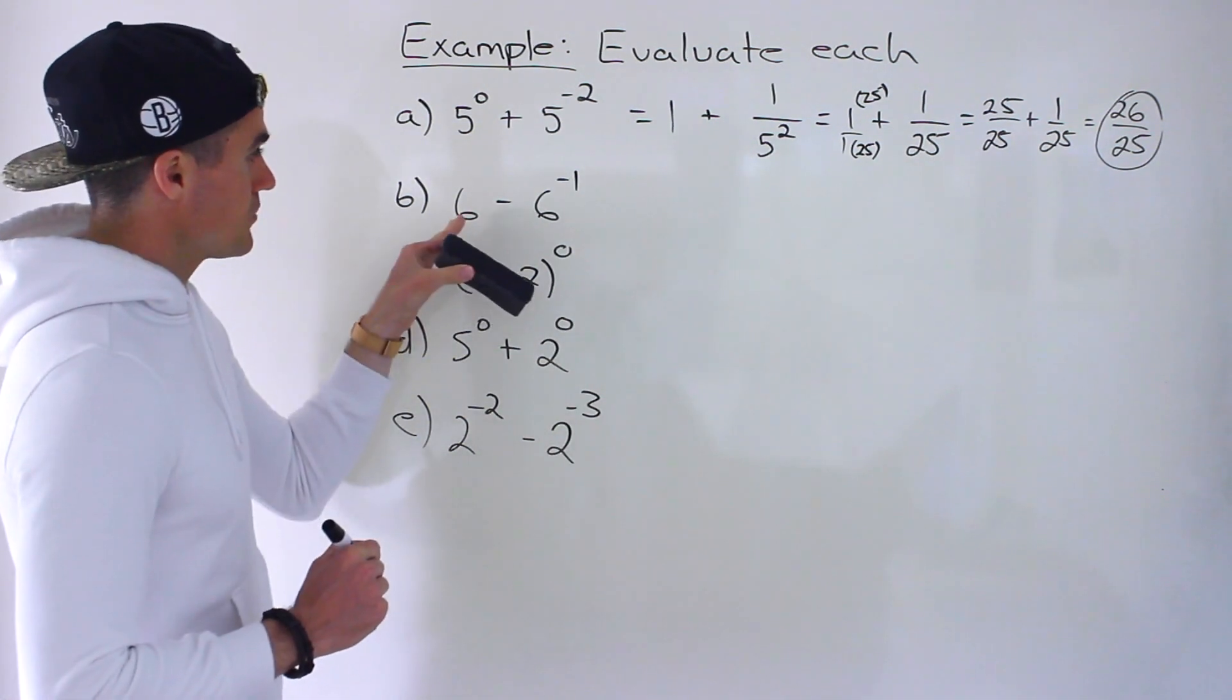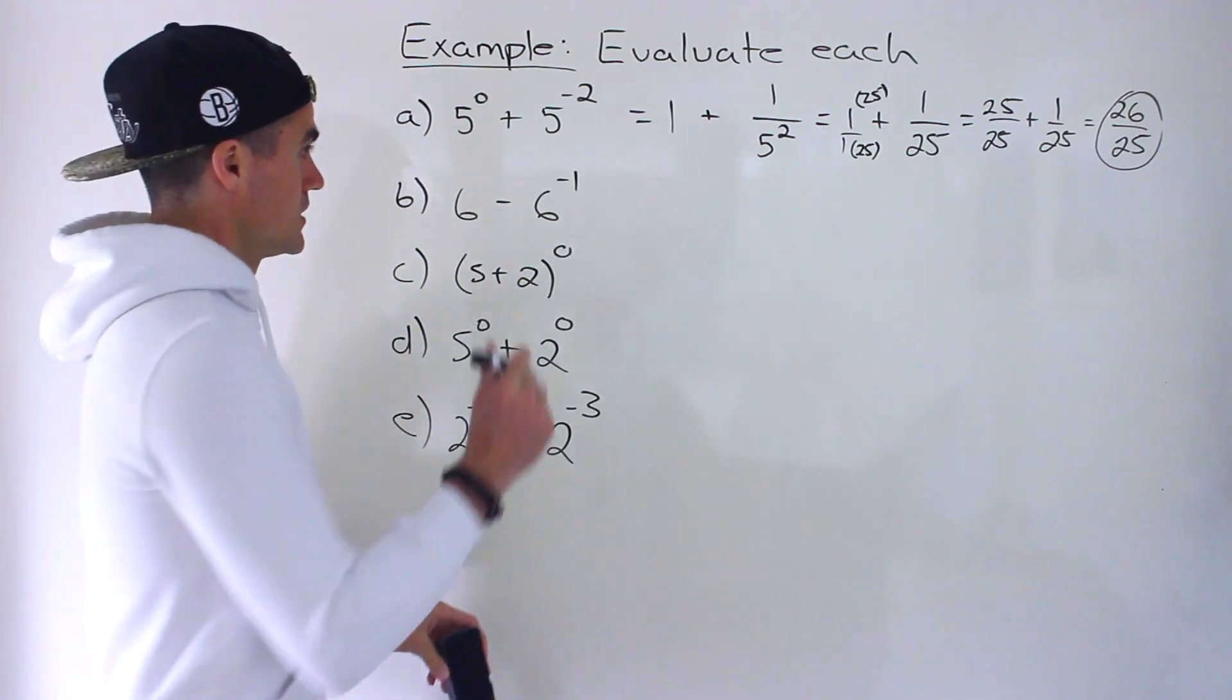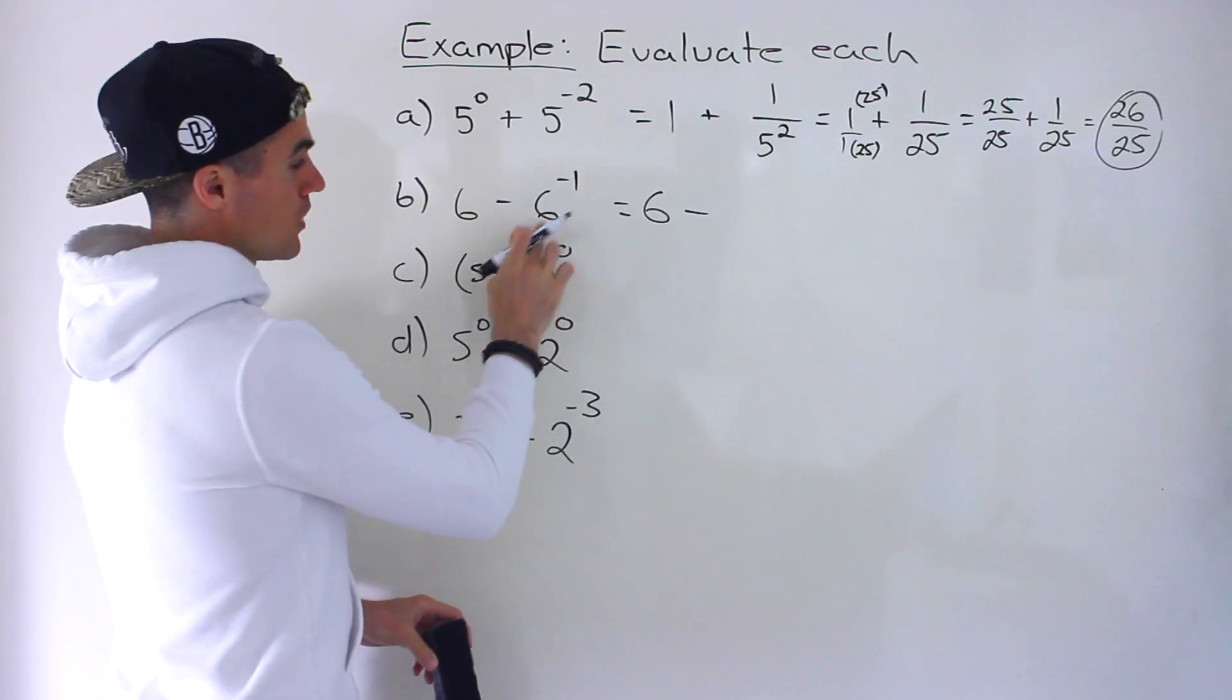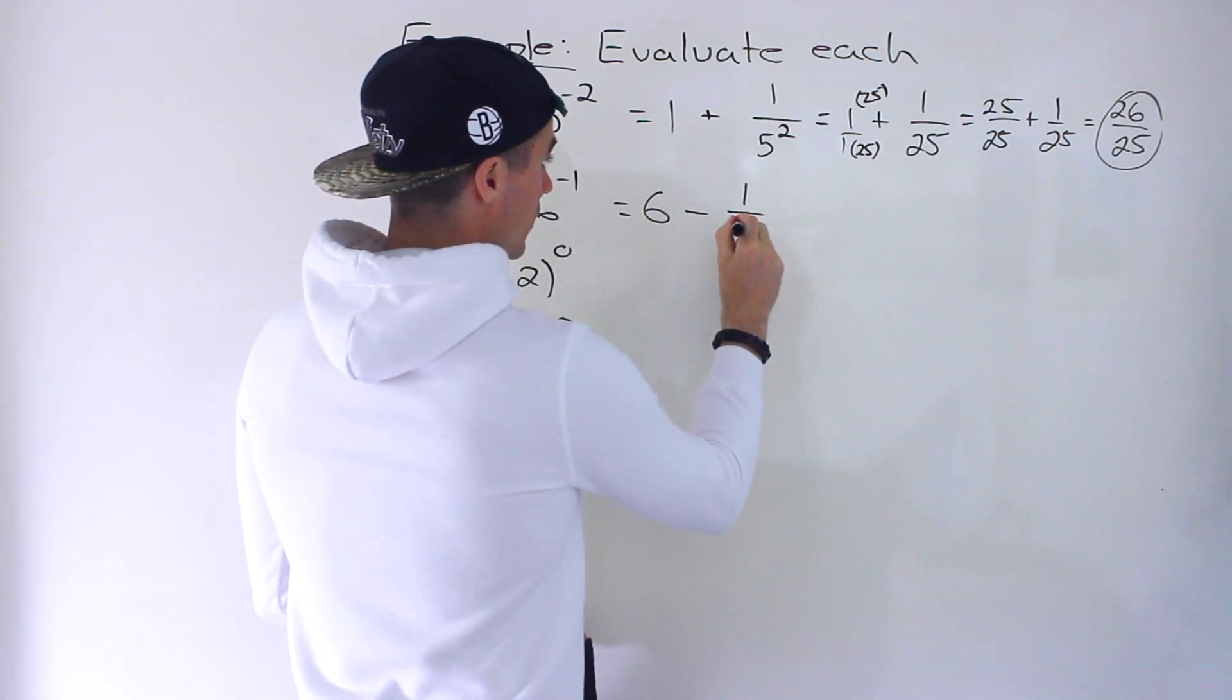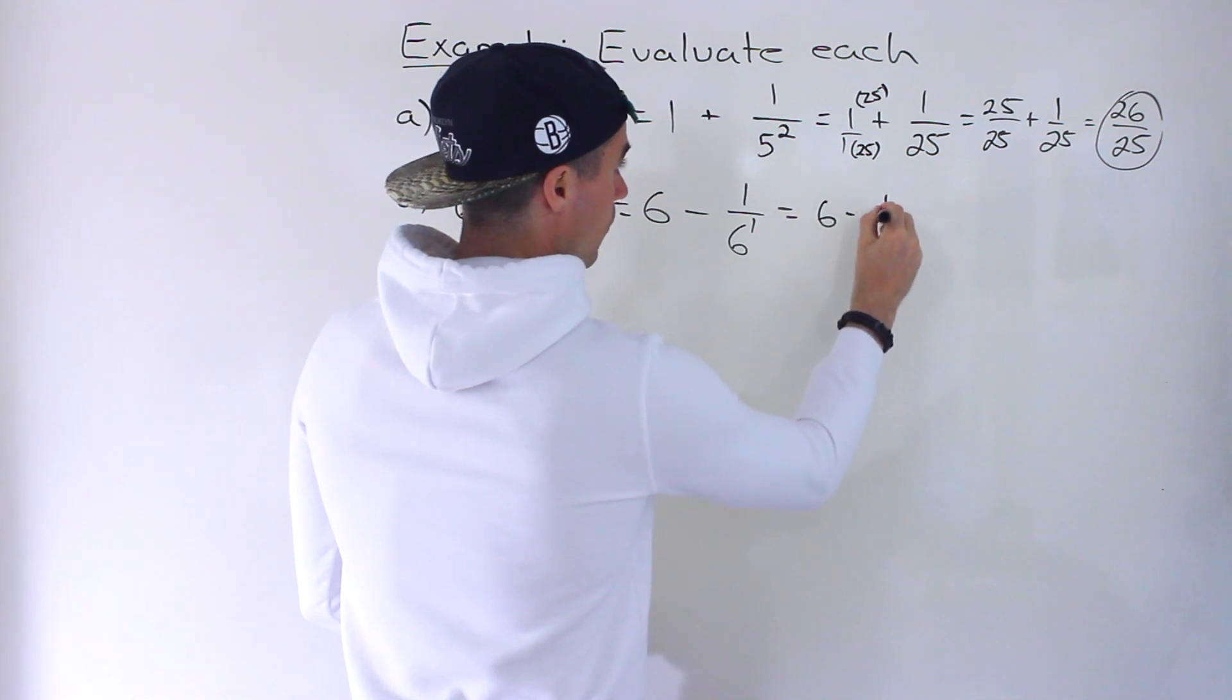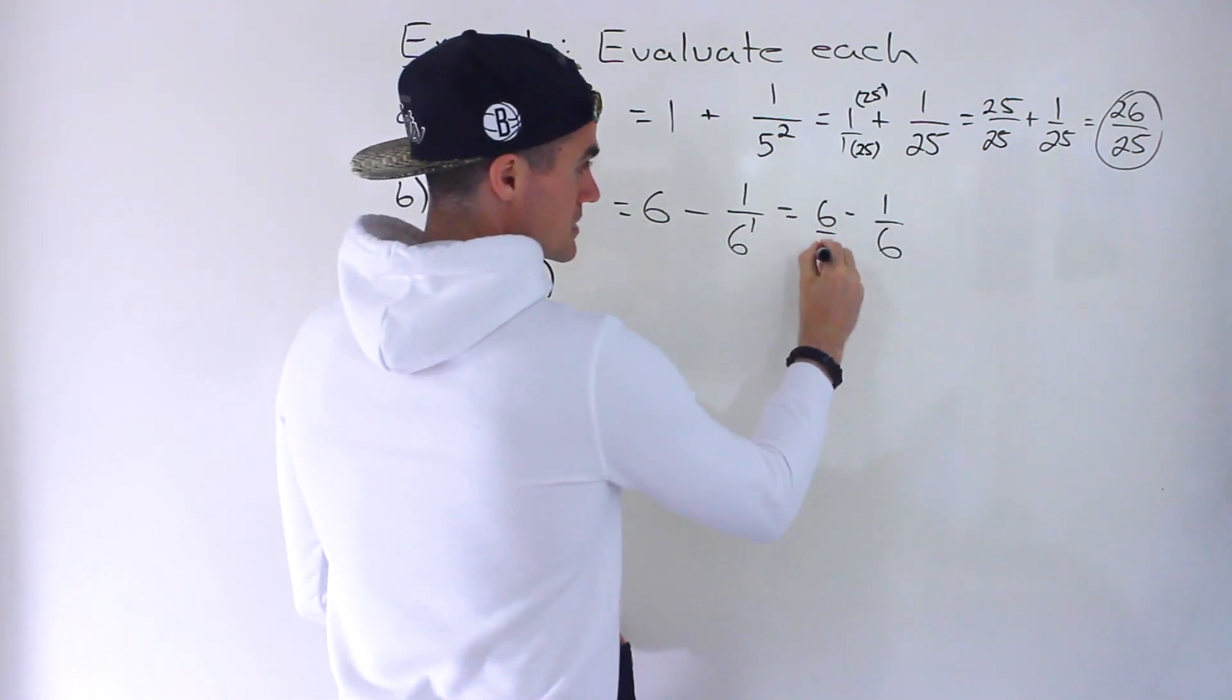Moving on to part B, we got 6 minus 6 to the negative 1. So same thing over here, the 6, let's just keep as it is. And then over here we got to work with this exponential expression. So 6 to the power of negative 1 is 1 over 6 to the power of positive 1, which is just 1 over 6. And then we can evaluate this.